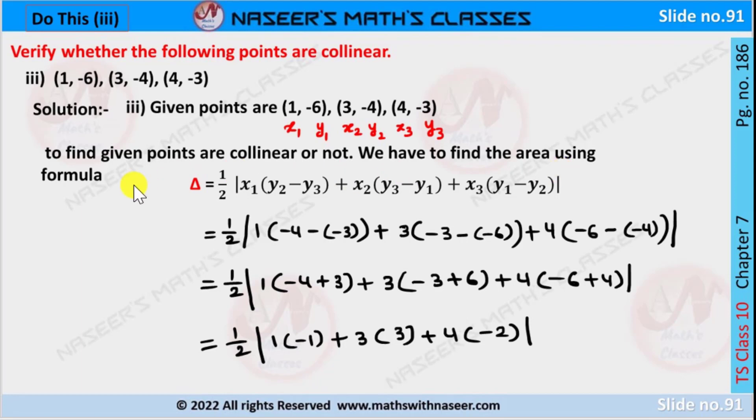To find if the given points are collinear or not, we have to find the area using formula: Delta equals 1/2 into [x1(y2−y3) + x2(y3−y1) + x3(y1−y2)]. Now we substitute x1 y1 x2 y2 x3 y3 values,